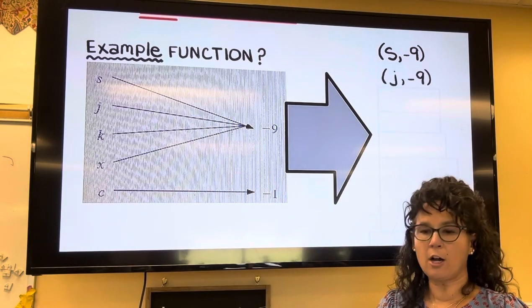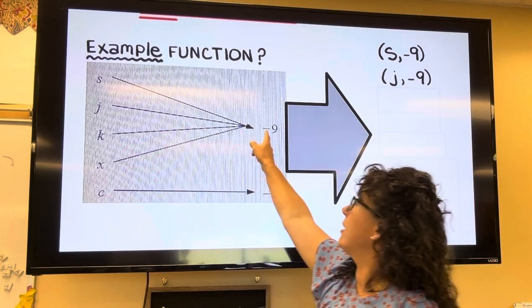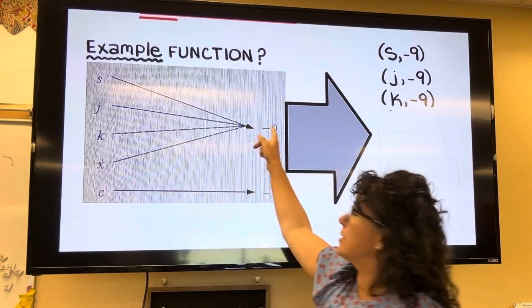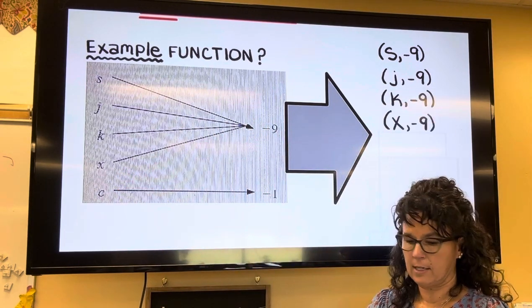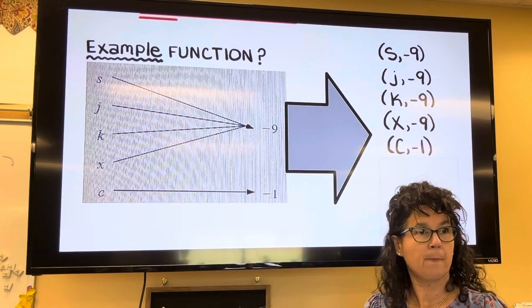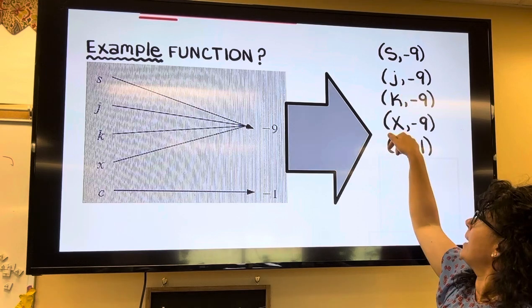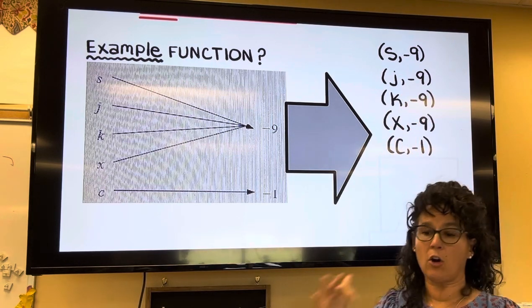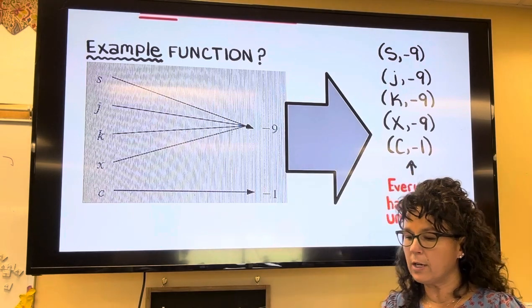So j comma negative 9, k goes to negative 9, x goes to negative 9, and c goes with negative 1. Notice all of my x's are different—s, j, k, x, c—they are all different.